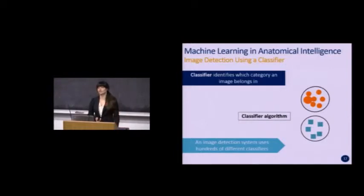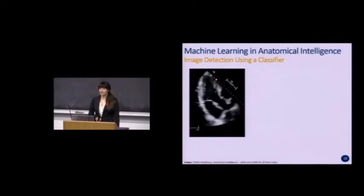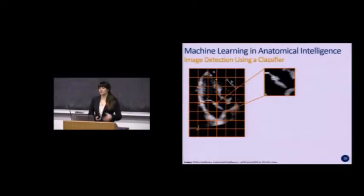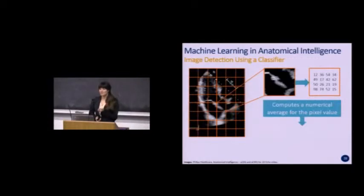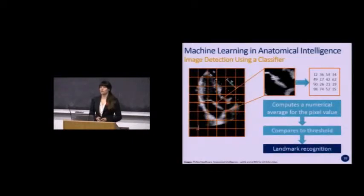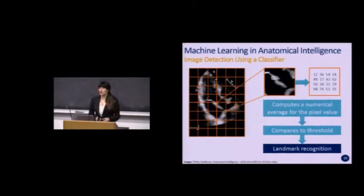In an ultrasound image of a heart, the system segments the image and analyzes each portion by converting it to an average pixel value — comparing light and dark pixels into a numerical value. If this value matches the range set in the threshold for the classifier algorithm, the landmark is recognized. A landmark is some portion of the organ being recognized — for instance, in a heart image, the landmark of interest might be the mitral valve, so the image would be positive for the mitral valve but negative if it were imaging a kidney.